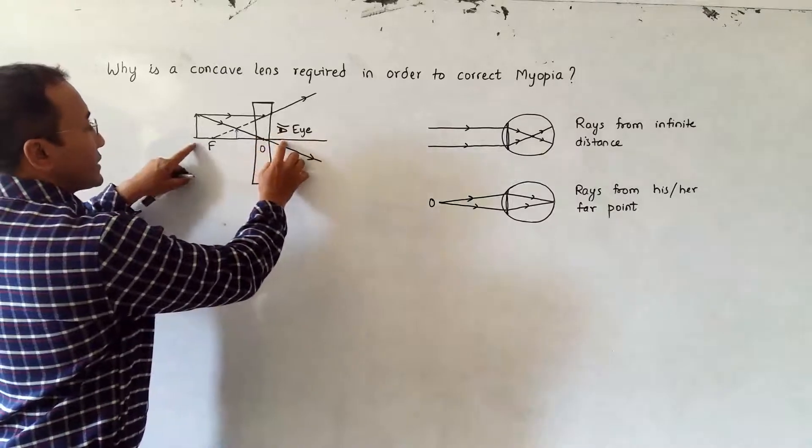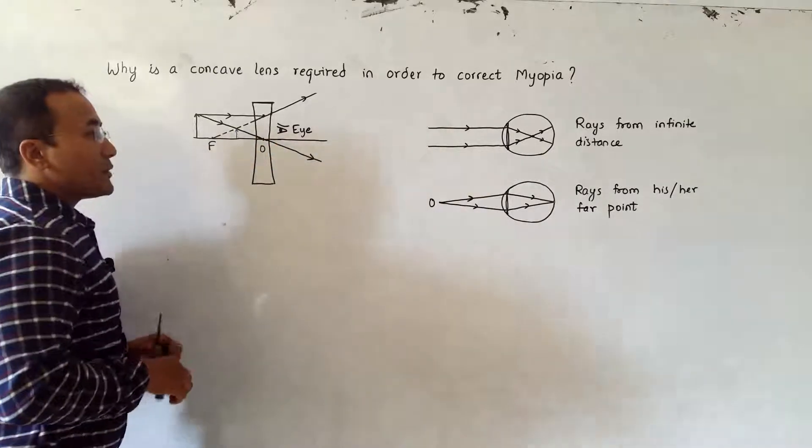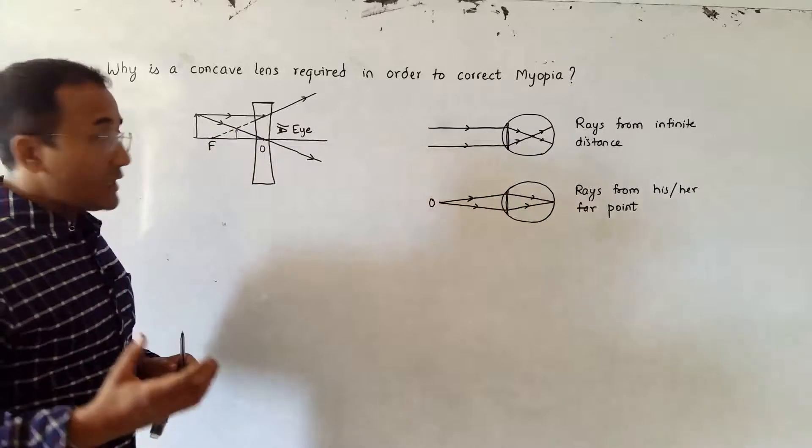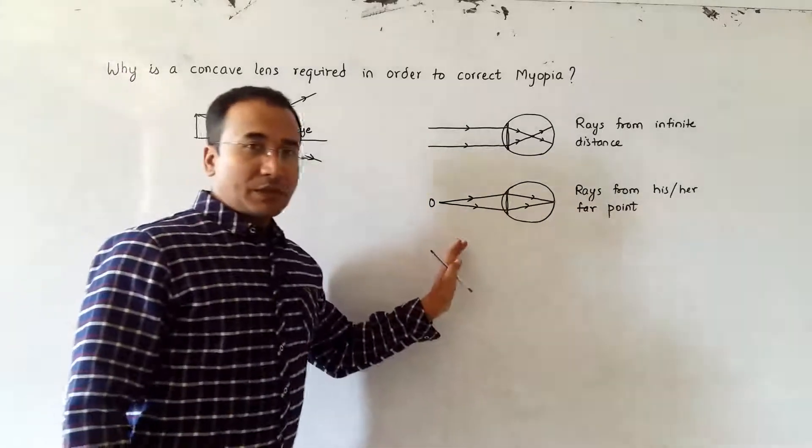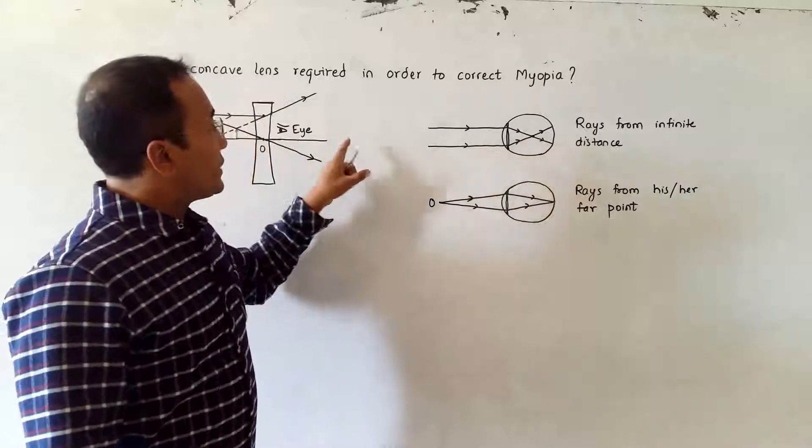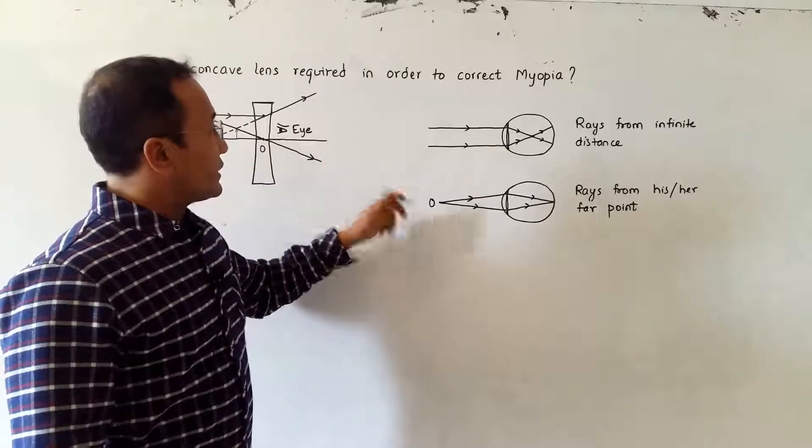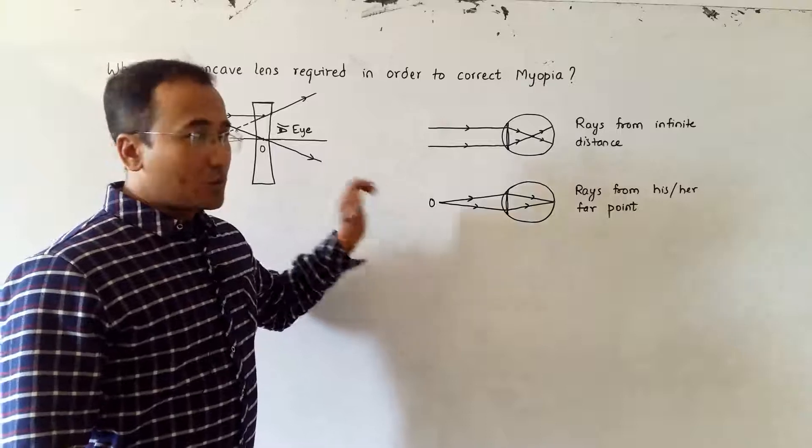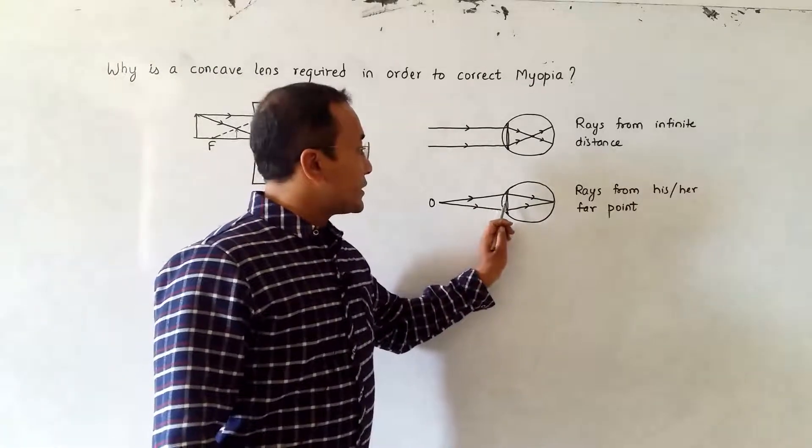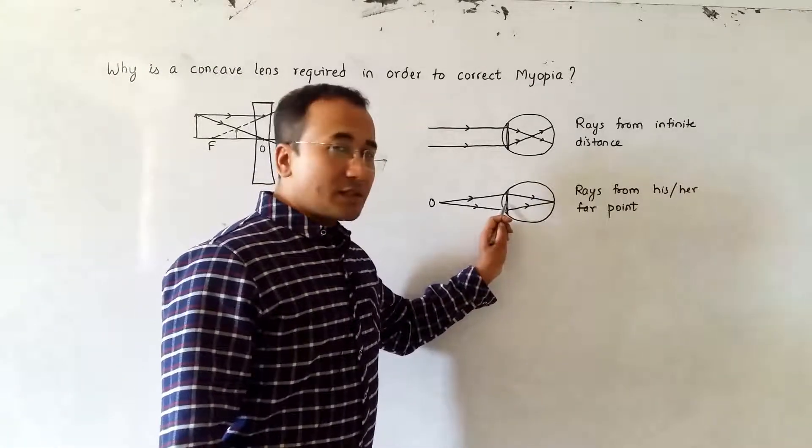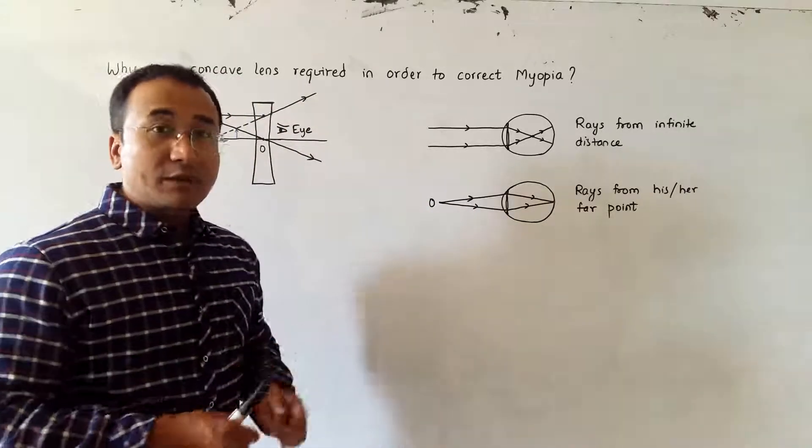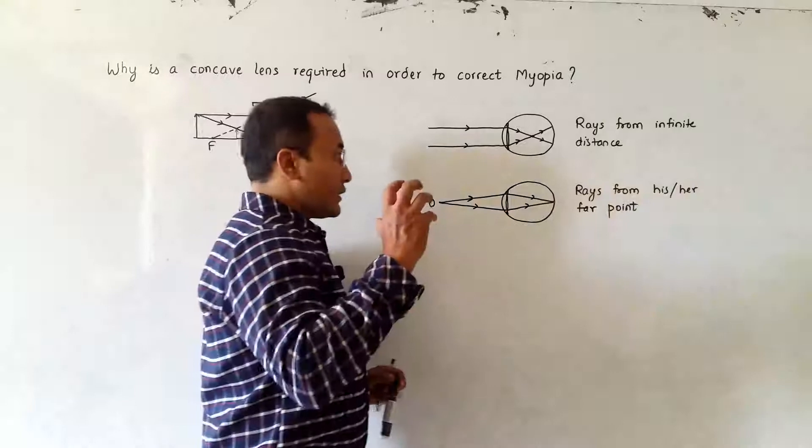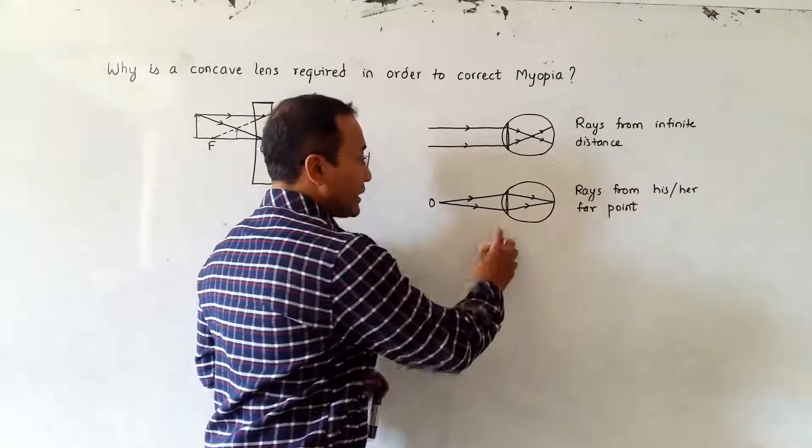That means the image appears to be nearer to the eye than the object. The same technique is applied here. So what we do is bring the object from infinity to this distance using a concave lens right in front of the eye, so that it will be brought nearer, and after bringing it nearer, the function of seeing is done by the eye itself.